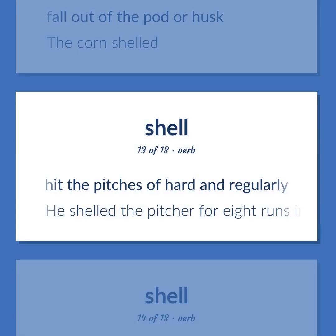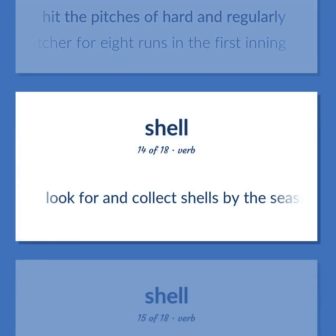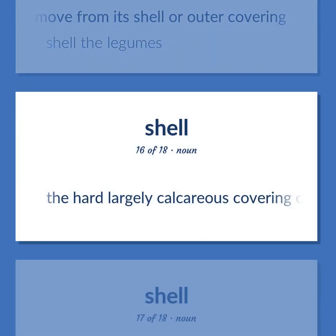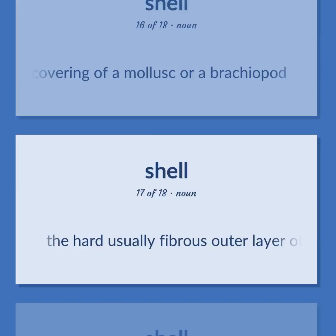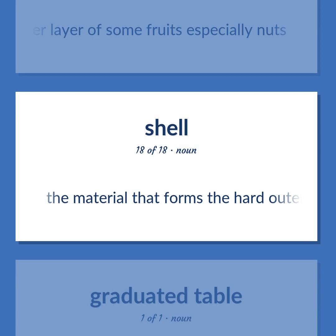Shell: Hit the pitches of hard and regularly — he shelled the pitcher for eight runs in the first inning. Look for and collect shells by the seashore. Remove from its shell or outer covering — shell the legumes. The hard largely calcareous covering of a mollusk or a brachiopod. The hard usually fibrous outer layer of some fruits, especially nuts. The material that forms the hard outer covering of many animals.